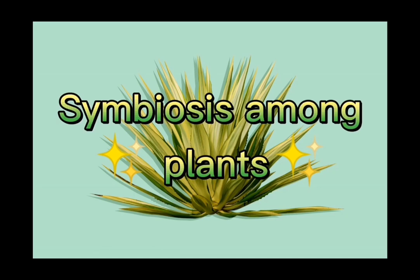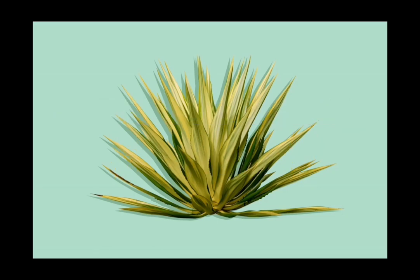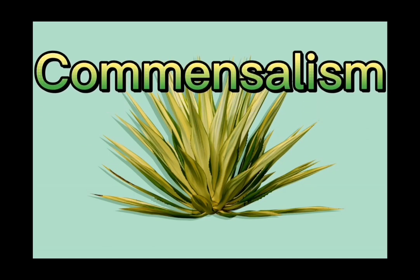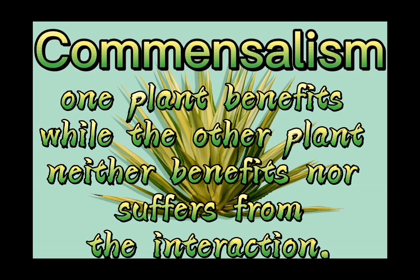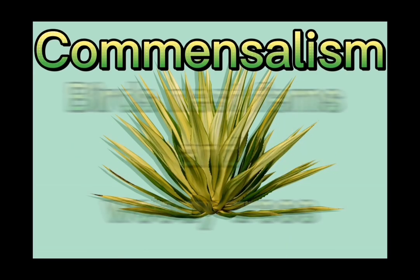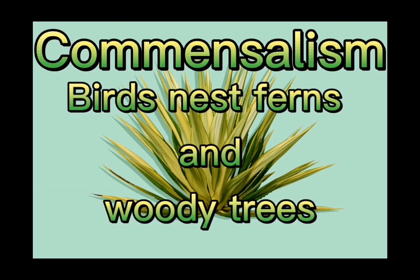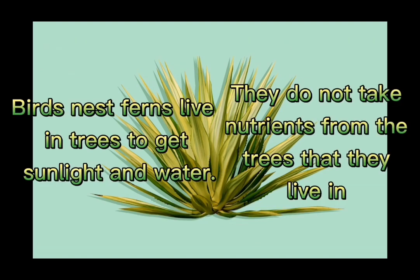Symbiosis Among Plants — Commensalism: one plant benefits while the other plant neither benefits nor suffers from the interaction. Example — birds' nest ferns and woody trees: birds' nest ferns live in trees to get sunlight and water. They do not take nutrients from the trees that they live in.